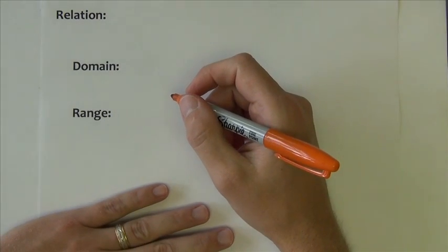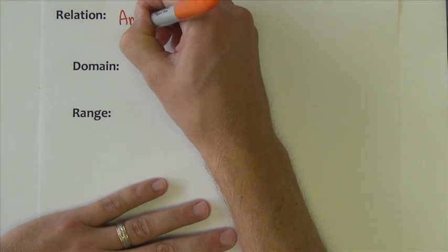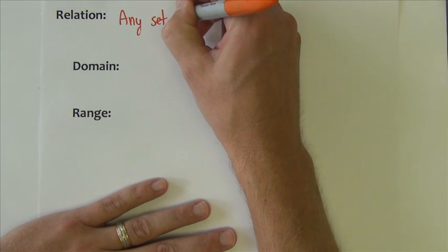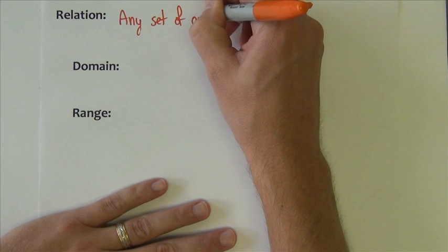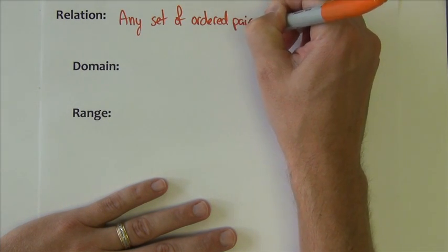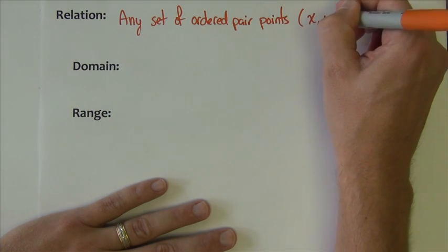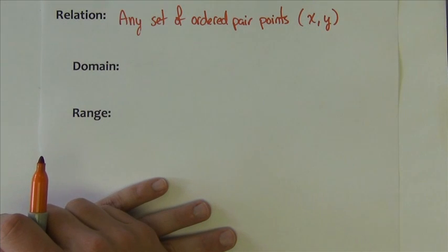So starting with some vocabulary, a relation is simply any set of ordered pair points. Ordered pair points being like x comma y points.